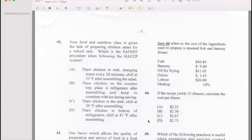Number 42: Your food and nutrition class is given a task to prepare a salad. Which is the safest procedure when following HACCP system? Number 42 is B: throw chicken in the container and keep the container in ice during serving.